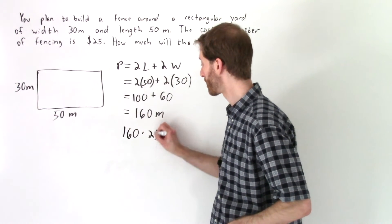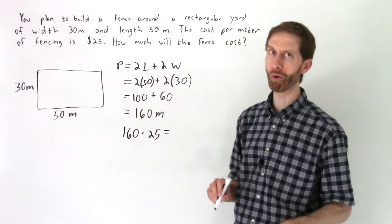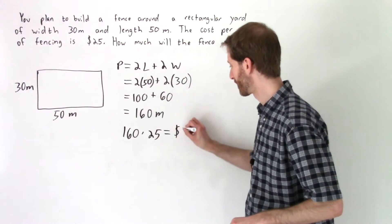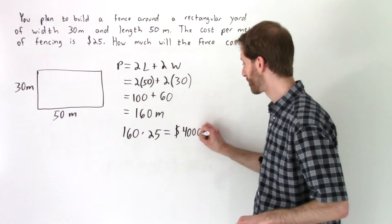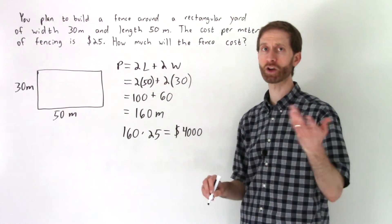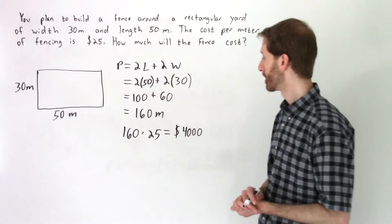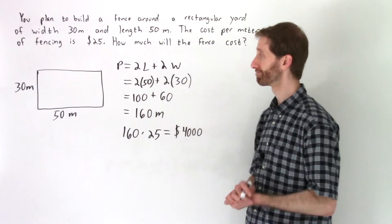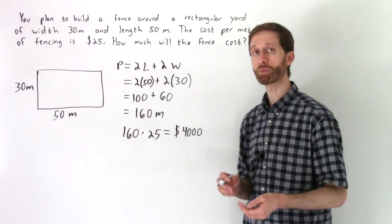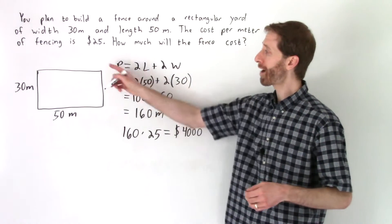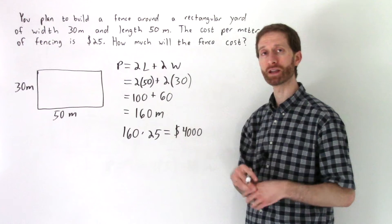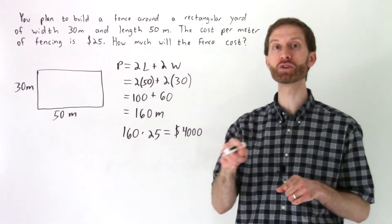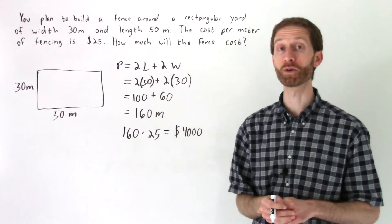160 times 25 will give us $4,000, which is actually depending on what part of the country in the United States you are not that much and depending on where you are from the world that might be a lot or might be a little. $4,000 for the fence. That's it. Translated the word problem, wrote out a picture as we had the opportunity and then kept going from there. Stay tuned for the other side of the video for an area word problem.